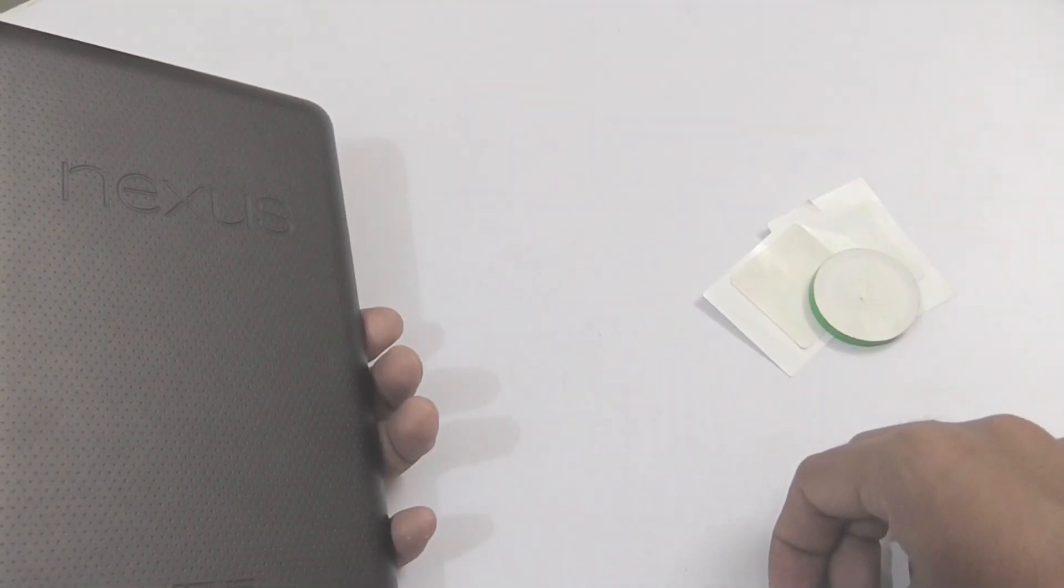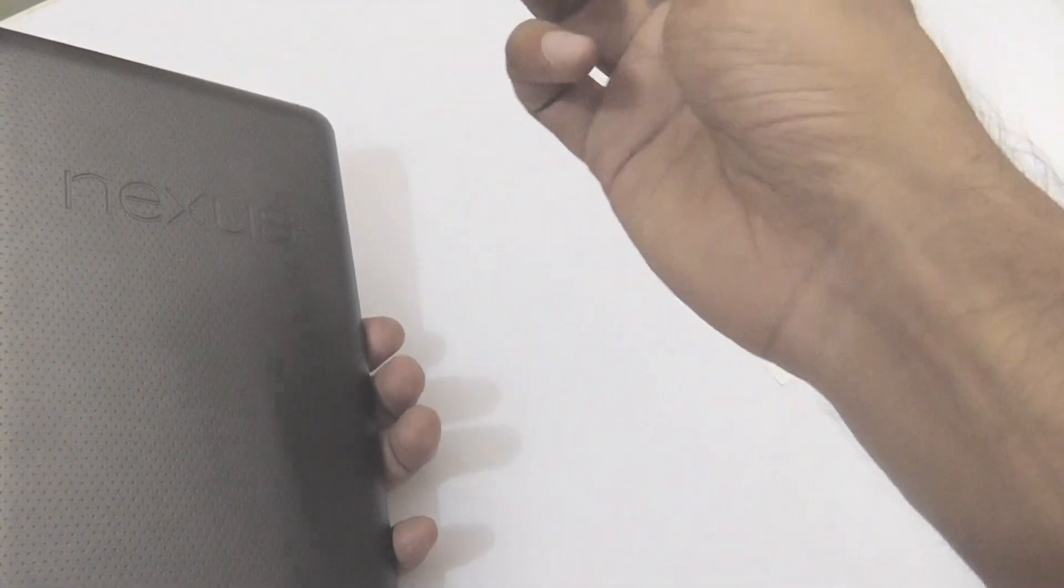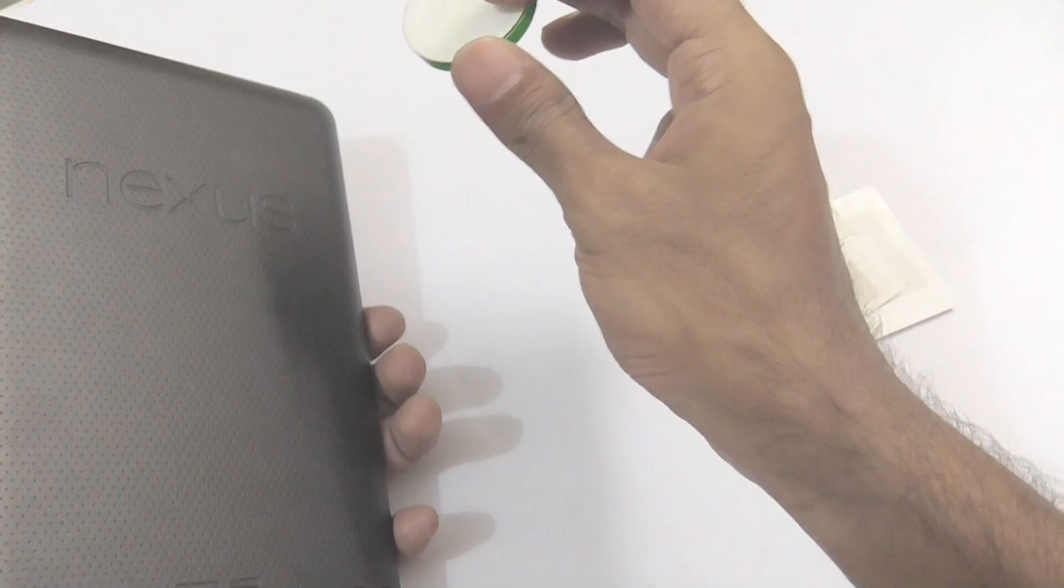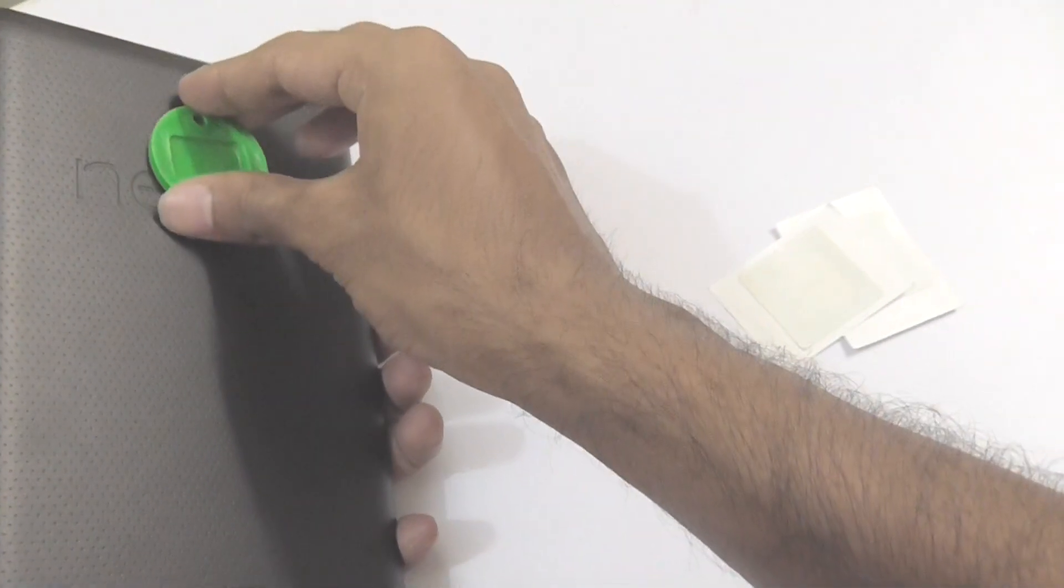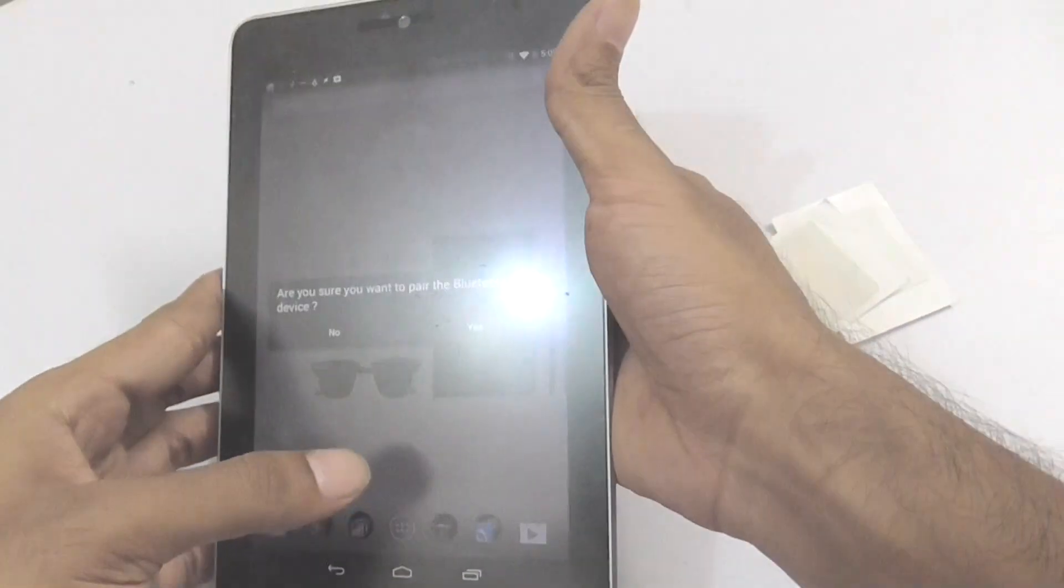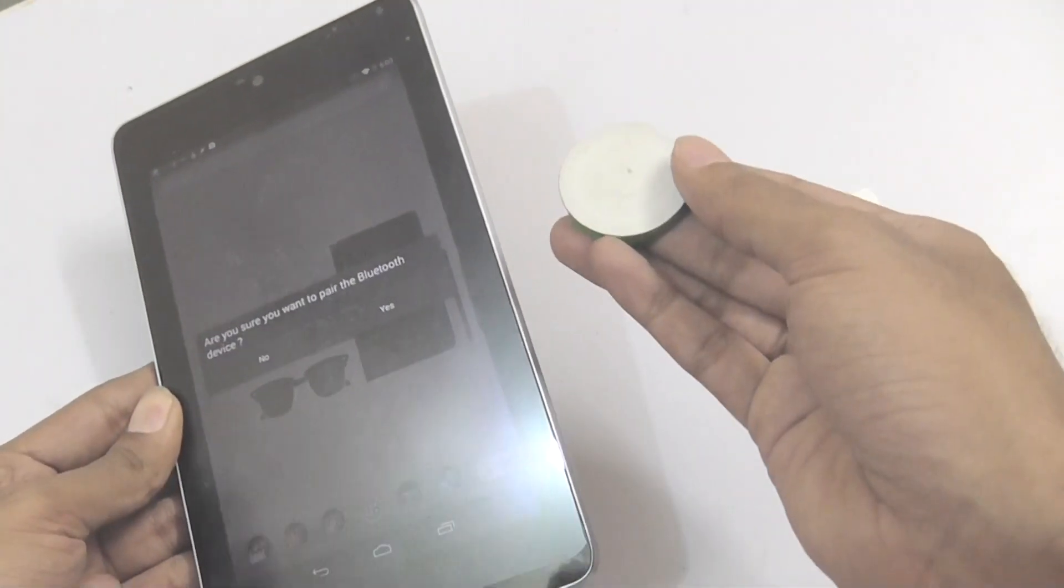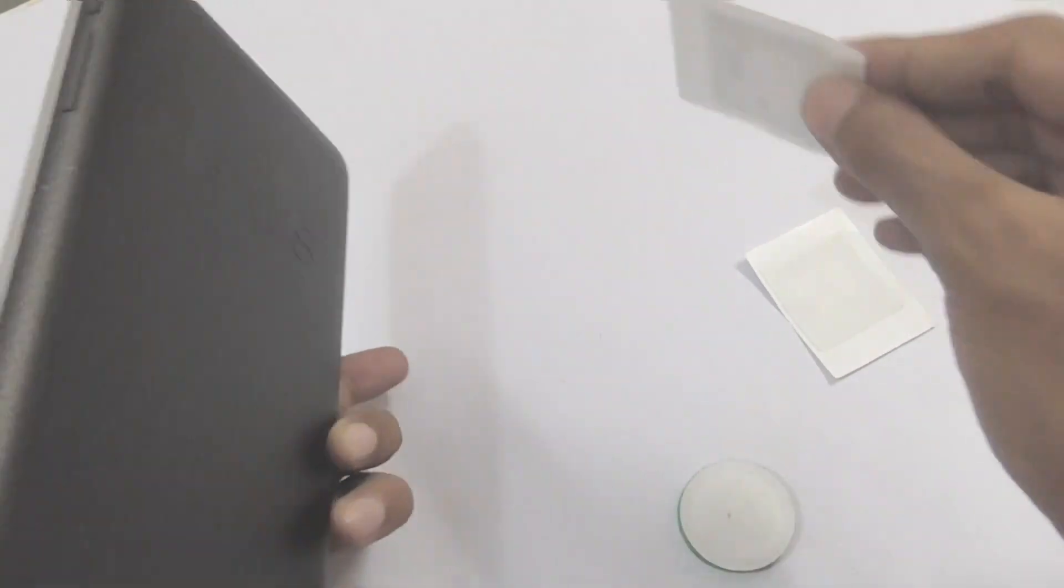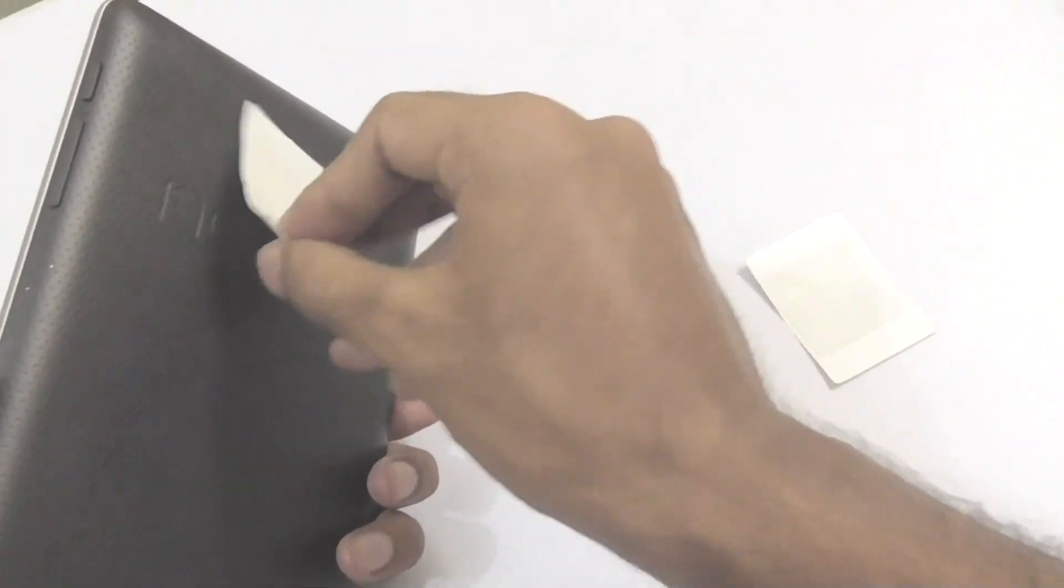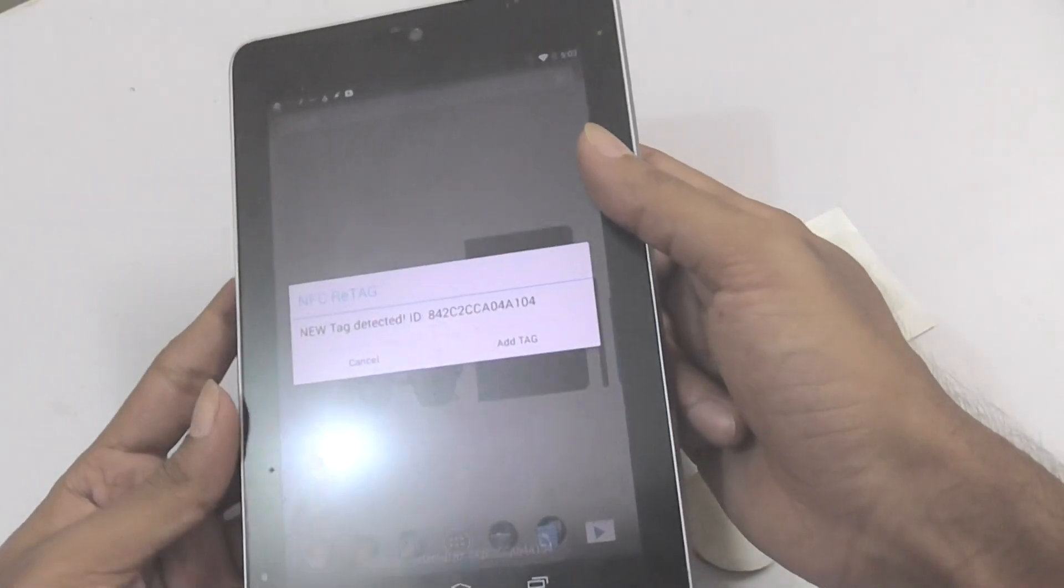So what happens is, now once the NFC tag comes inside this magnetic field, electricity will be induced inside this NFC tag. And let me just place it. I have programmed this NFC tag to pair to Bluetooth, so it will say this. If I get another NFC tag and place it inside the magnetic field of this device, you will see that it says NFC tag detected with its ID.